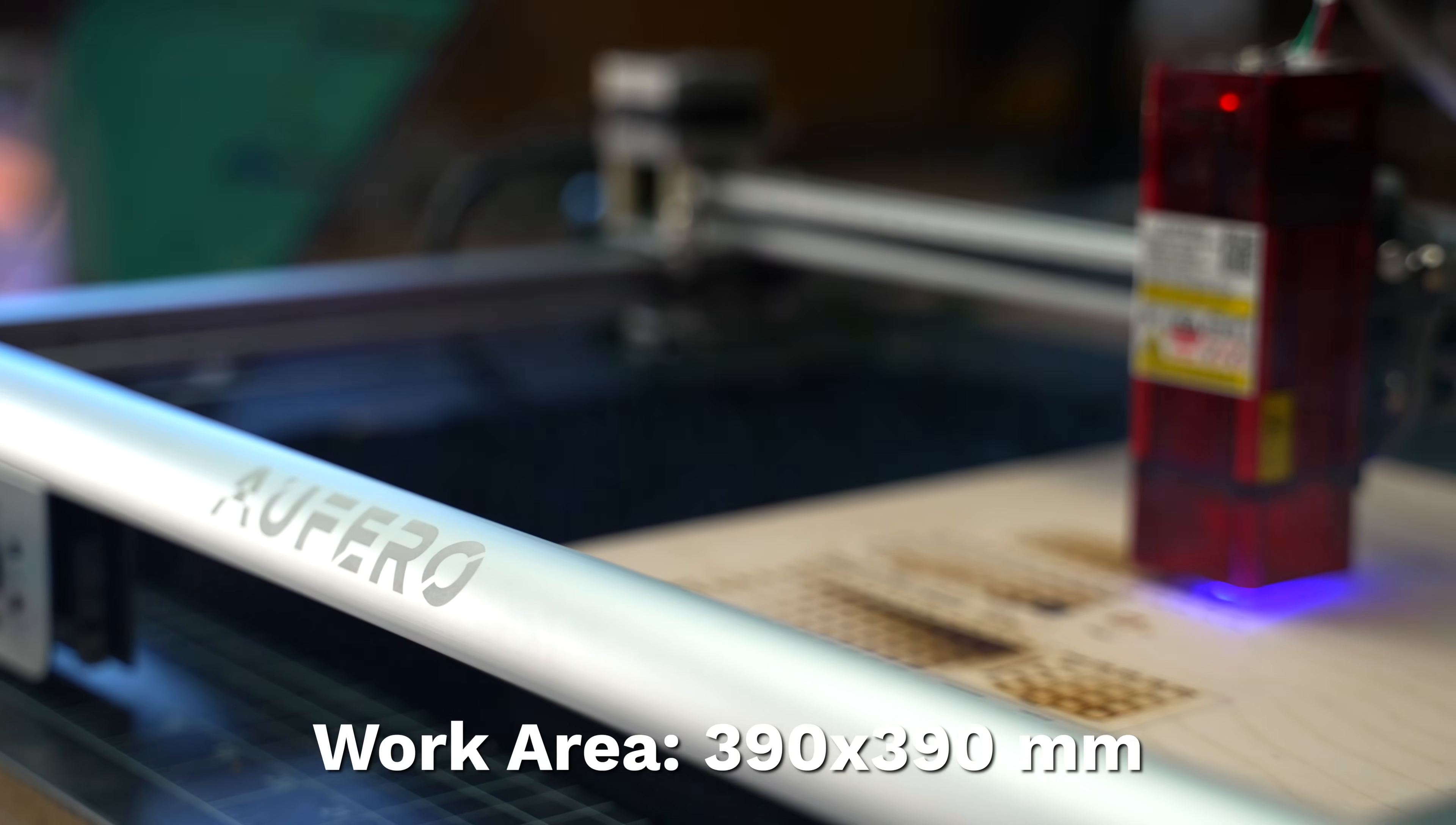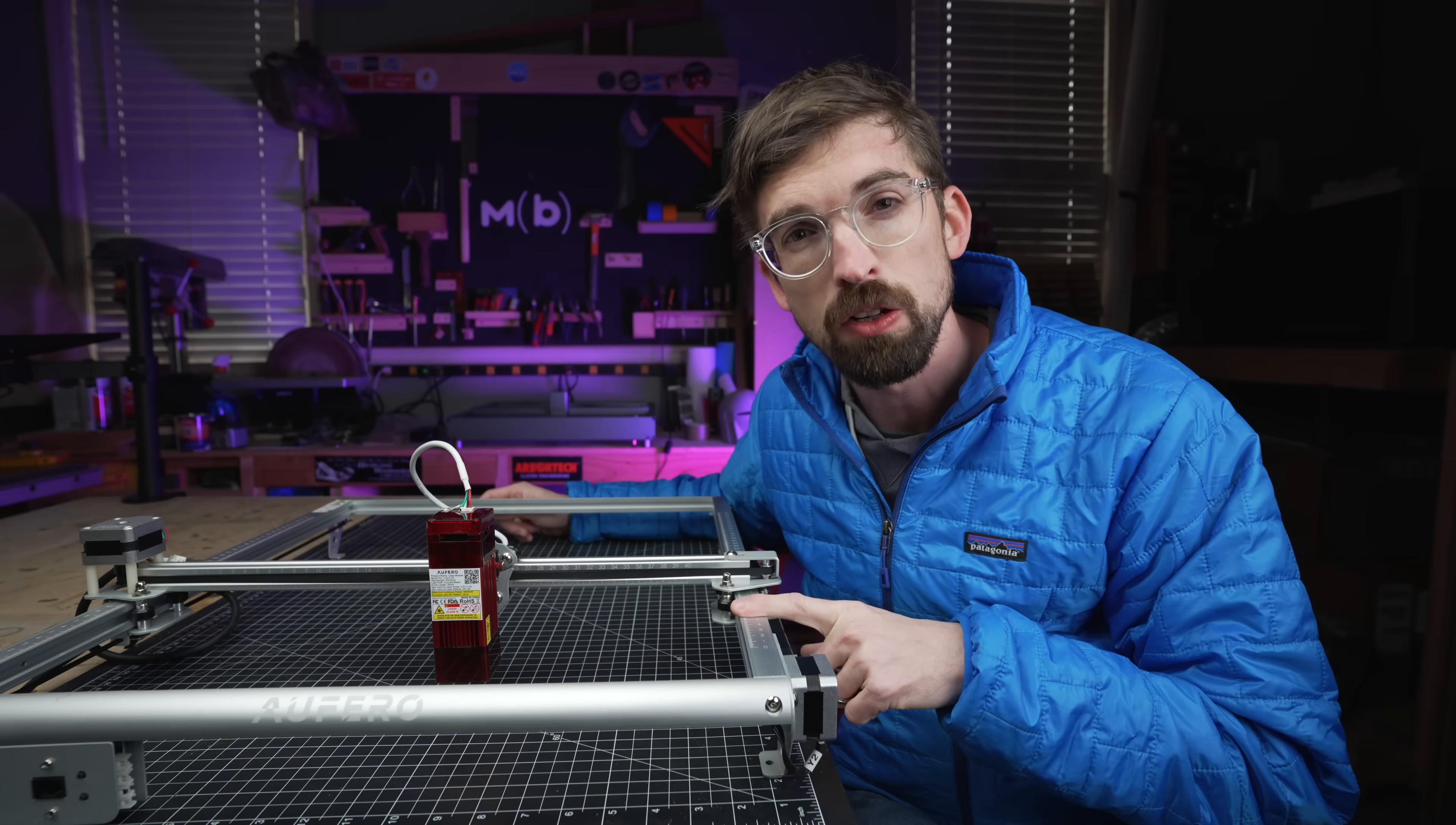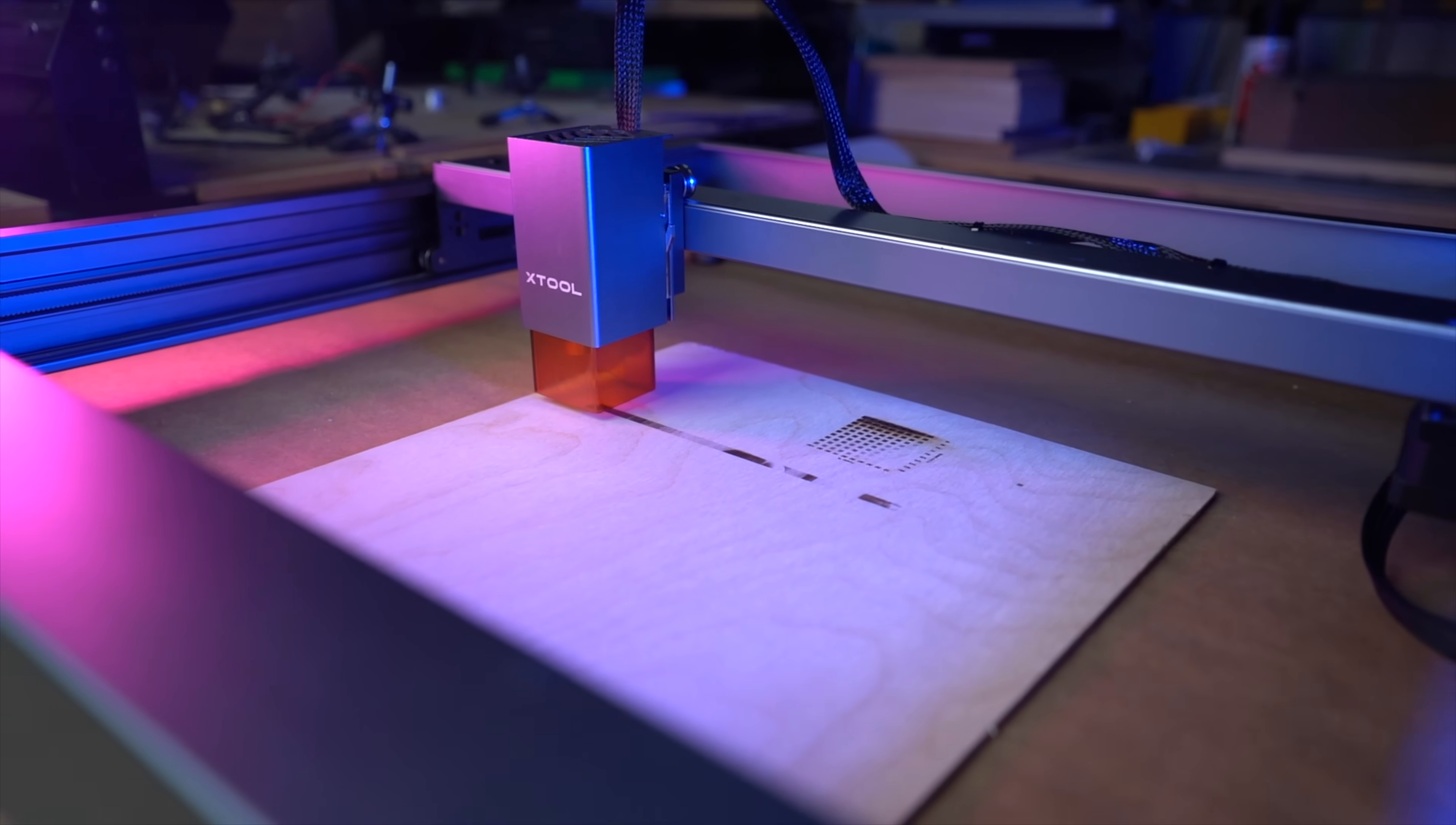In terms of the work area, this is 390 by 390 millimeters, which is just a little bit shy of the Pro, which is 400 by 400. And this is a good bit smaller than the more expensive X-Tool D1, which is actually right back there, which is 430 by 406 millimeters.